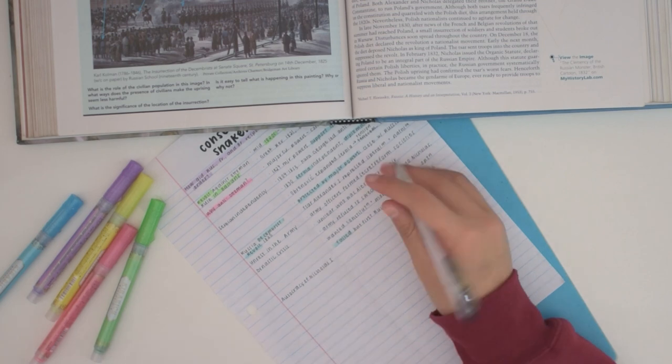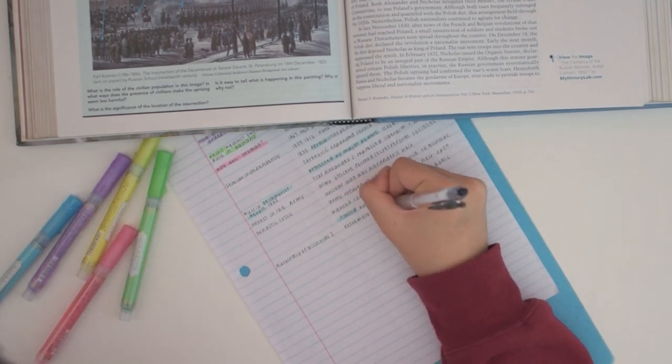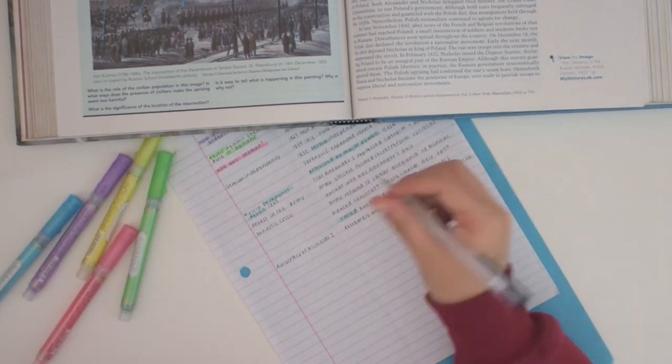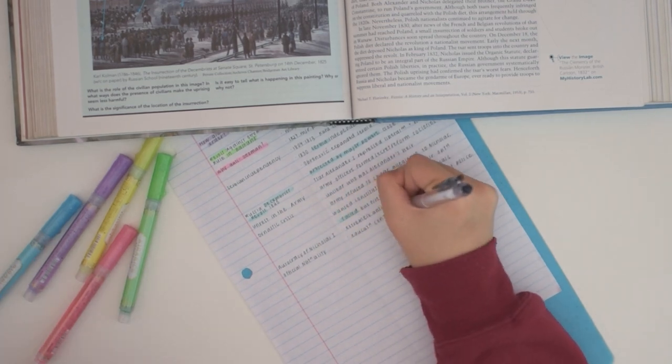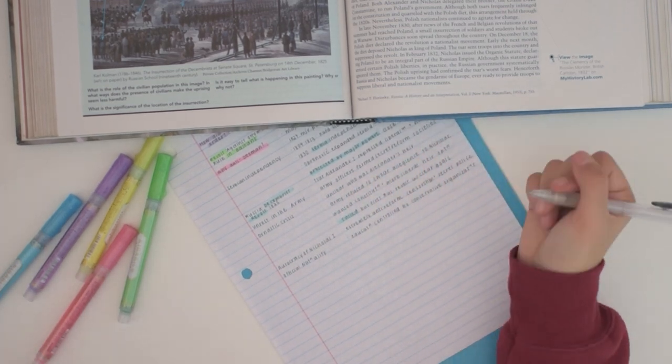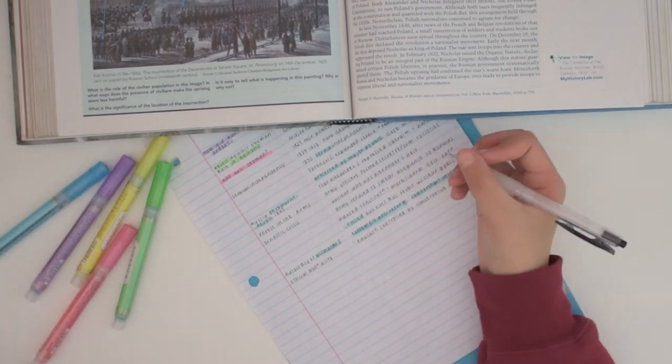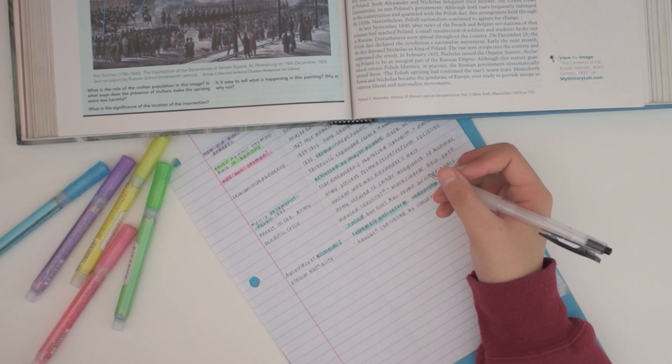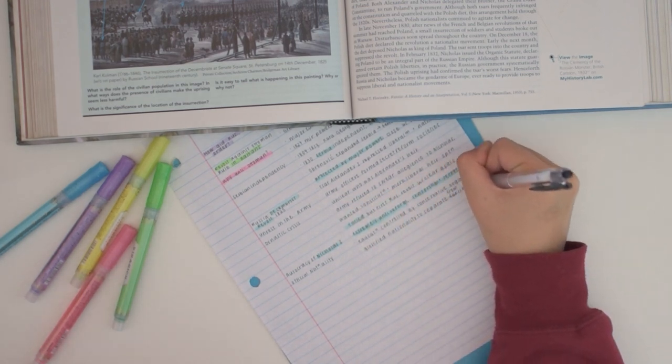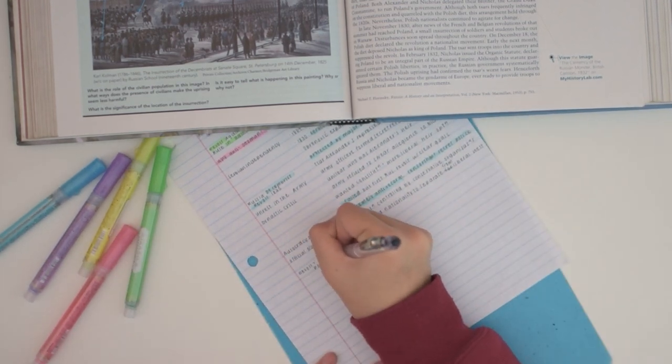Another question, which pens don't bleed through pages? Generally, ballpoint pens bleed through the least, but I don't really like to use ballpoint pens, because they don't offer a completely solid line. So if you don't want to use ballpoint, then gel pens are the next best option. Some gel pens that don't bleed through too much are the Zebra Sarasa or the Uniball Signo.